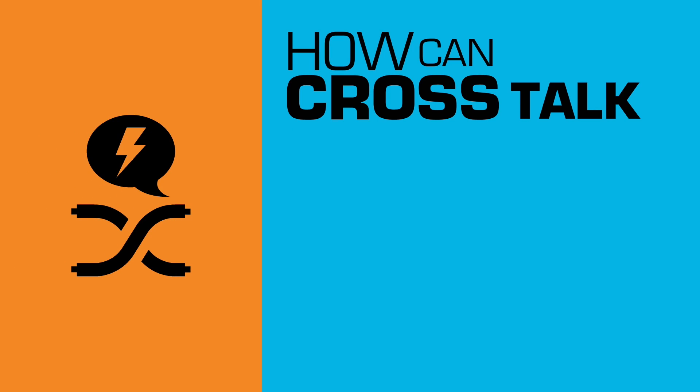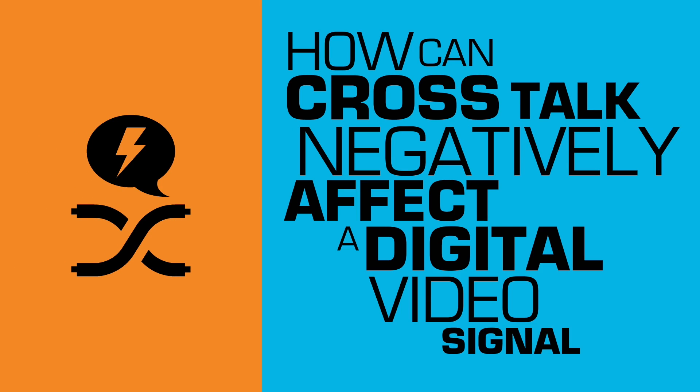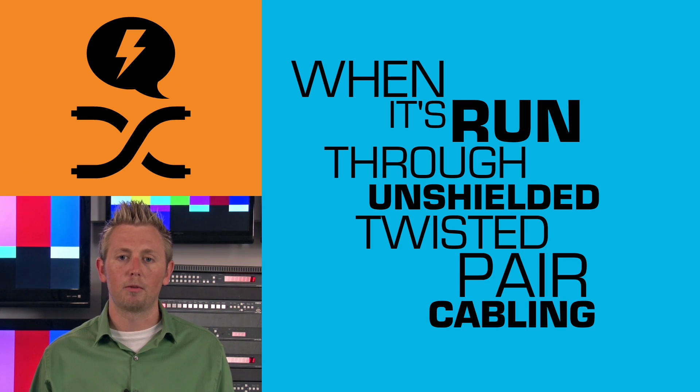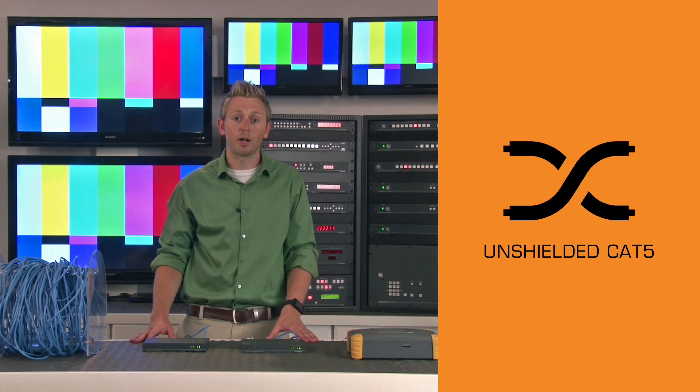How can crosstalk negatively affect a digital video signal when it's run through unshielded, twisted-pair cabling? Crosstalk is one of the most detrimental factors when sending HDMI over twisted-pair cables because information affected by crosstalk can't be recovered. In many ProAV installations, twisted-pair cable is run in bundles or through conduit, drastically increasing the chance for crosstalk. I want to show you what can happen when you have two unshielded twisted-pair cables run in close proximity — this is when crosstalk becomes a factor and can ruin a good installation.